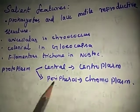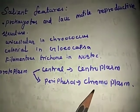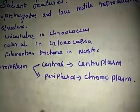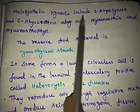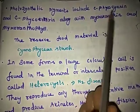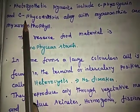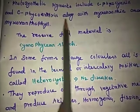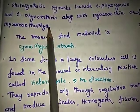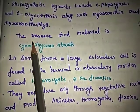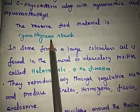The peripheral region bearing chromatophores is called chromoplasm. The photosynthetic pigments include C-phycocyanin along with myxoxanthin and myxoxanthophyll. The reserve food material in Cyanobacteria is cyanophysean starch.